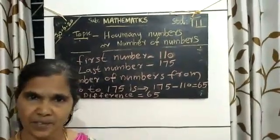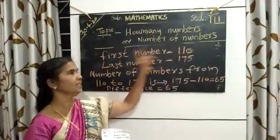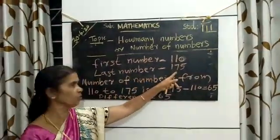Another example I will give you. Here we have first number 110, last number 175.